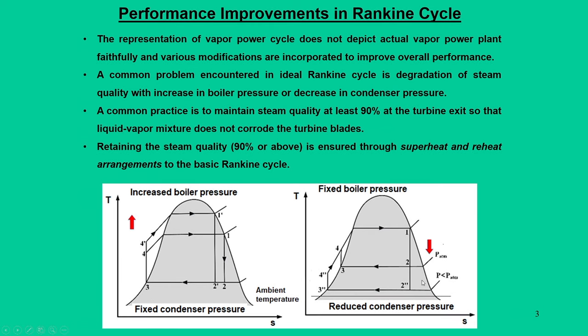For that reason, the turbine blade degrades. To overcome this problem, what we require is that steam quality is retained at least 90 percent at the turbine exit. So if we want to retain the steam quality at the turbine exit — state 2 — then we must push the inlet state into the superheated region.